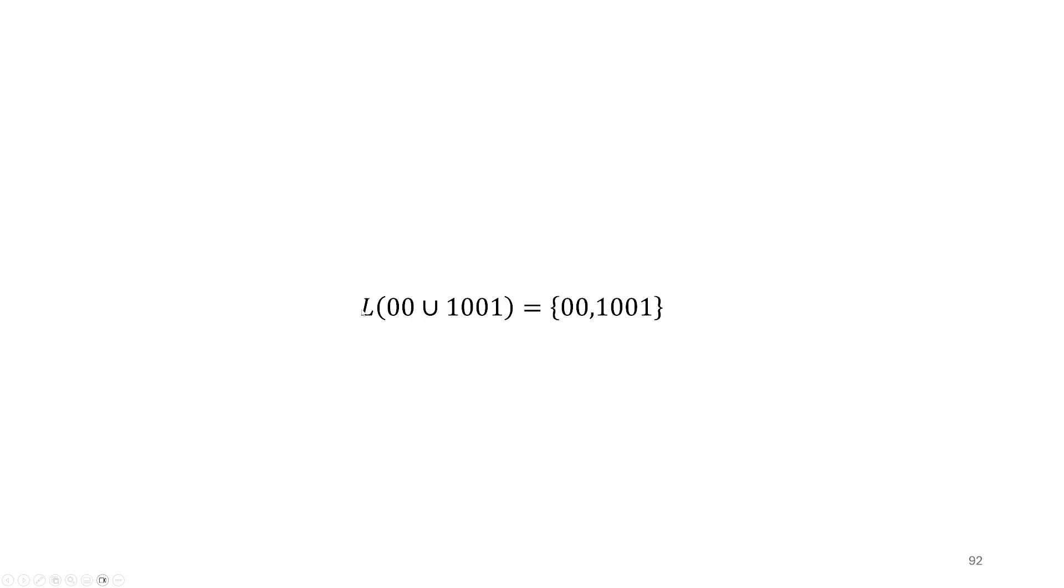it's really just identifying for us exactly two strings that are in the language. And that's it. It's saying the only two strings in this language are 0, 0 and 1, 0, 0, 1.